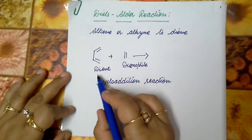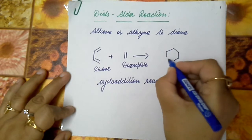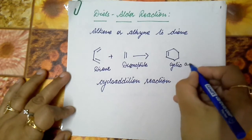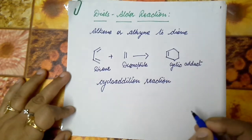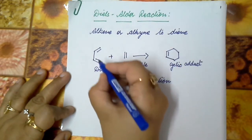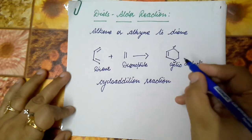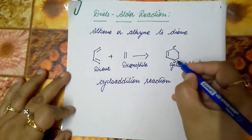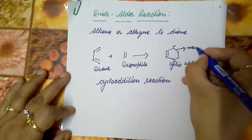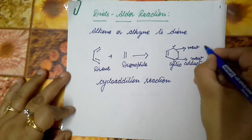This is a reaction between the dienophile and the diene. When these two combine with each other, there is a formation of a cyclic ring. A cyclic adduct is formed. There is a formation of bonds at the two end carbon atoms of the diene. Two new sigma bonds are formed — one new sigma bond and another new sigma bond.